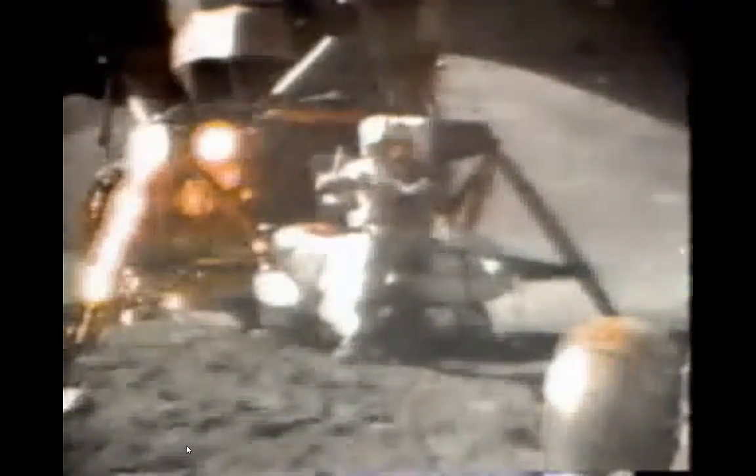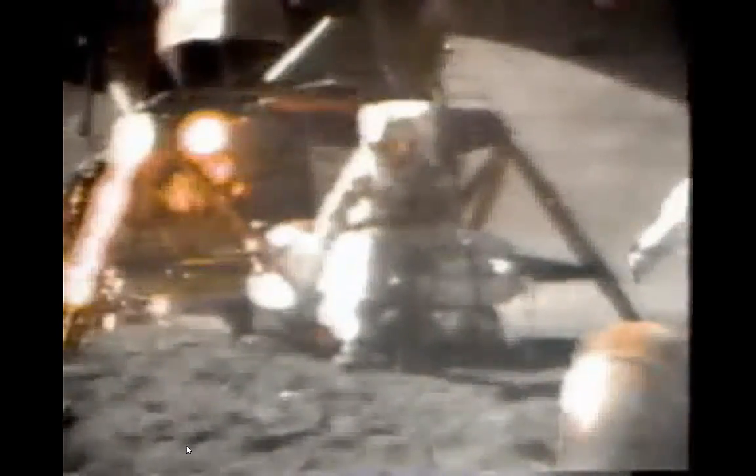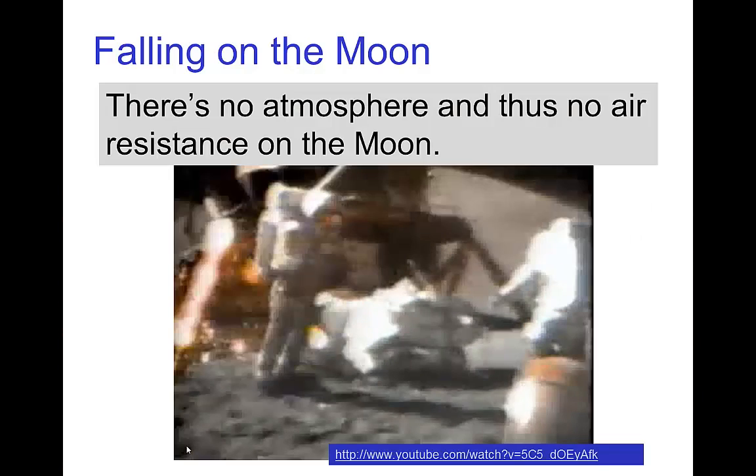Well, in my left hand I have a feather, in my right hand a hammer, and I guess one of the reasons we got here today was because of a gentleman named Galileo a long time ago who made a rather significant discovery about falling objects in gravity fields. And we thought that where would be a better place to confirm his findings than on the moon. And so we thought we'd try it here for you. The feather happens to be appropriately a falcon feather for our falcon, and I'll drop the two of them here, and hopefully they'll hit the ground at the same time.